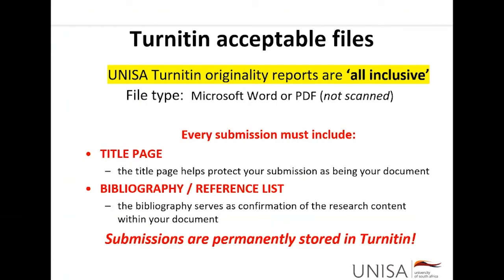The files you upload need to be all-inclusive because UNISA works with all-inclusive originality reports. Nothing is to be cut from or changed within the document — you submit it just like you would submit to your lecturer, including a title page for every submission as well as a bibliography or reference list. The title page helps protect the submission and identify authorship, especially if an undue conflict is found that needs to be analysed. It also means that if someone in future tries to plagiarise from your work, that would be identified.